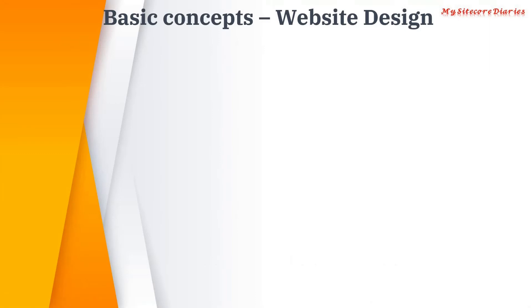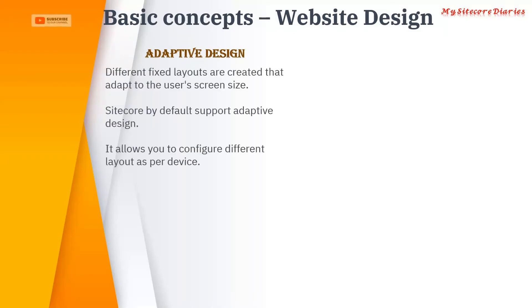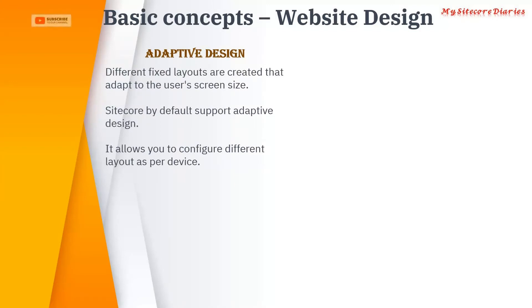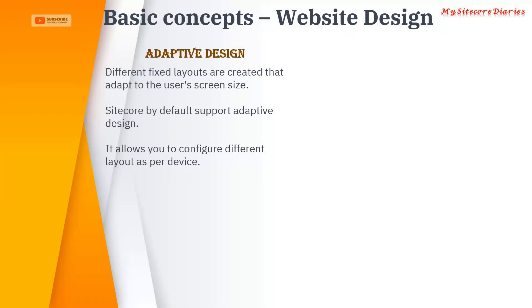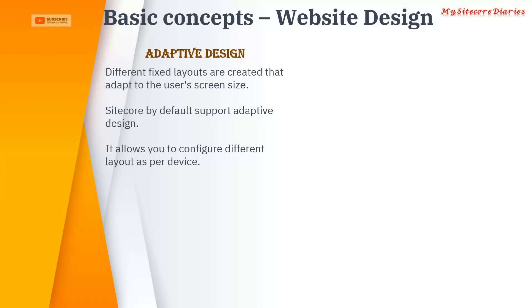Let's see a basic website design concept. Adaptive design — what is adaptive design? Different fixed layouts are created that adapt to the user's screen size. You have a laptop, desktop, and mobile — three different devices with different screen sizes. For adaptive design, you create a fixed layout depending on the screen size for each device, so there will be three different HTMLs created for laptop, desktop, and mobile. That is called adaptive design.